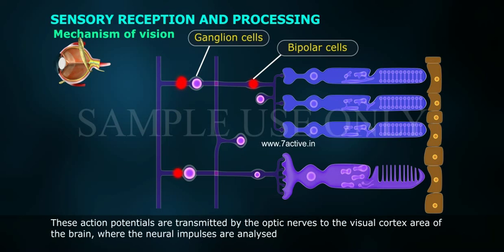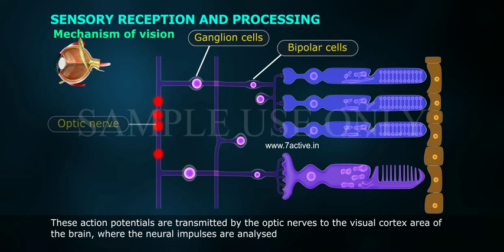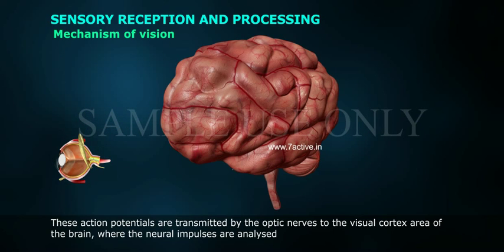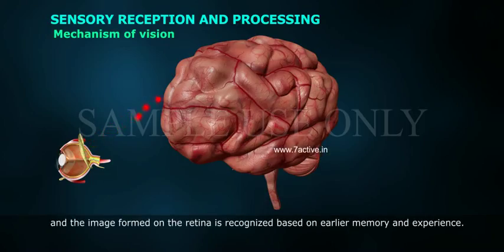These action potentials are transmitted by the optic nerves to the visual cortex area of the brain, where the neural impulses are analyzed and the image formed on the retina is recognized based on earlier memory and experience.